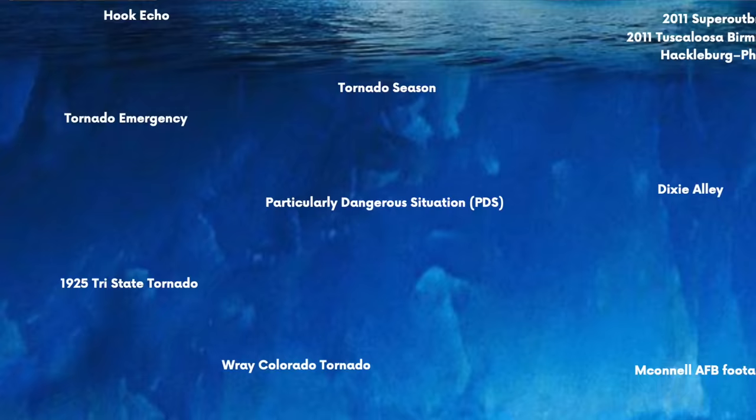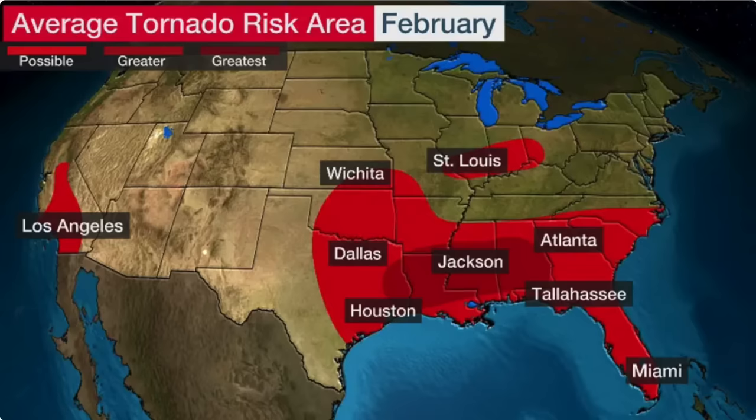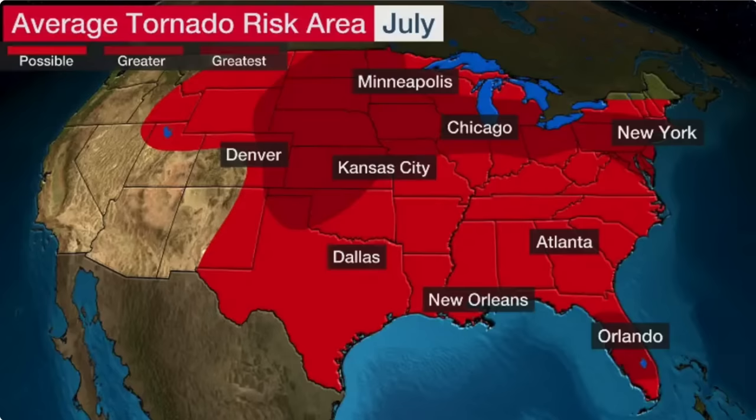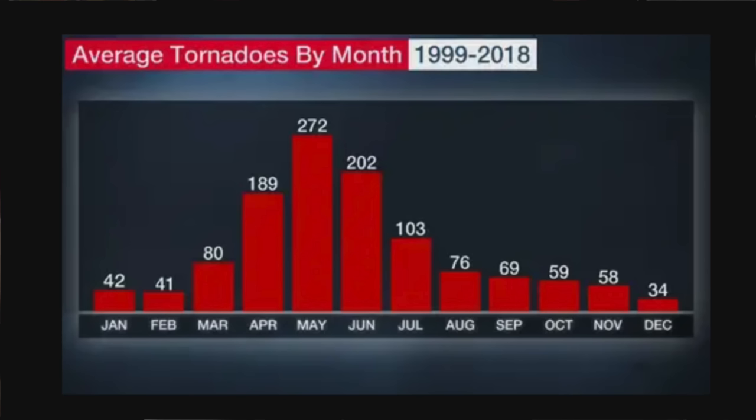Tornado season is the time of year when the most tornadoes occur. In the U.S., it varies by region but usually lasts between March and July, peaking at the end of May and early June. In the south, tornado season starts a bit earlier — March and April, sometimes even February. Tornadoes can occur any time of year, including December and January, so you always want to be prepared.